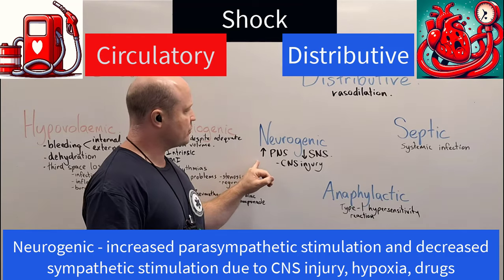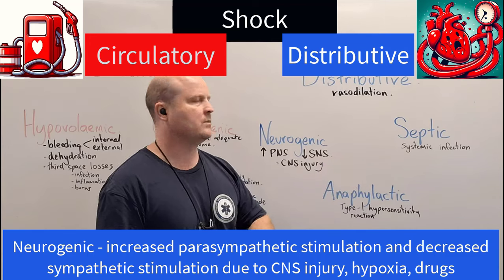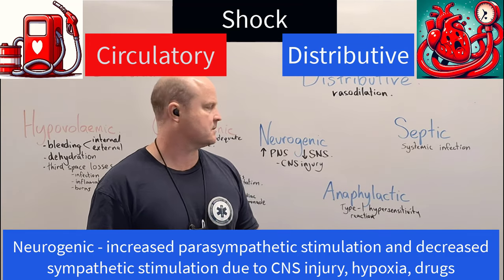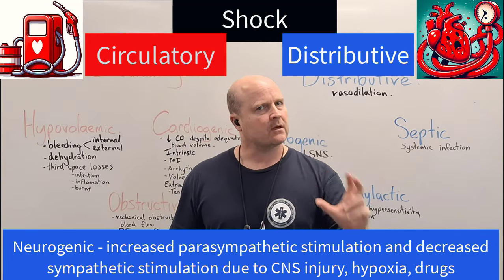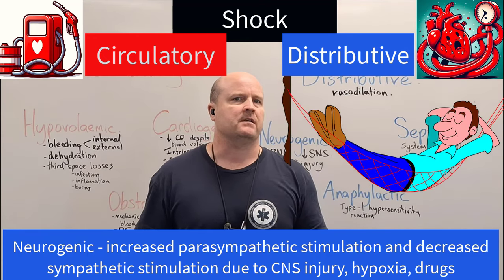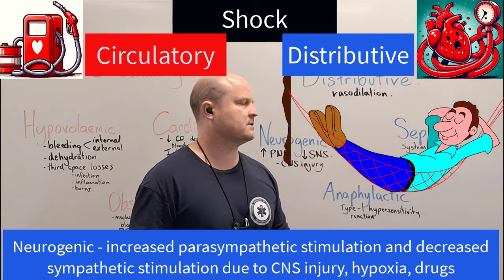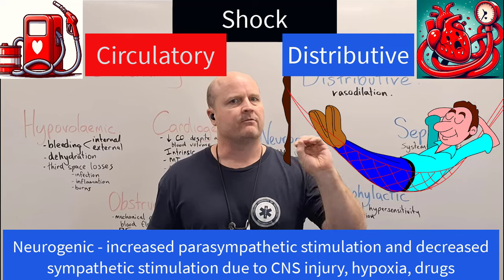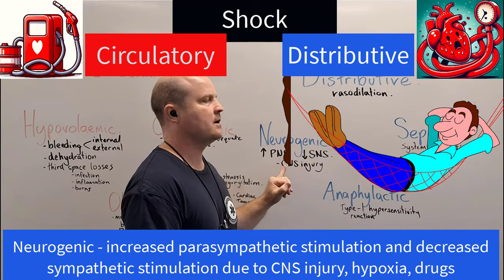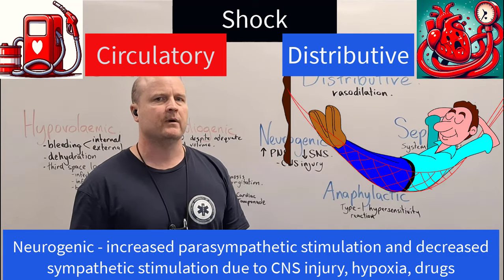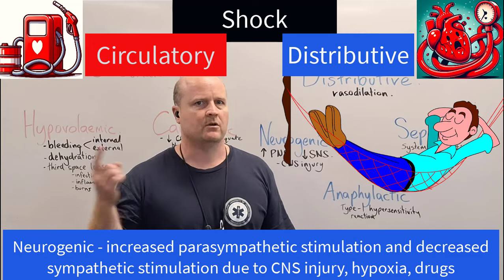Neurogenic shock involves increased stimulation of our parasympathetic nervous system and decreased stimulation of our sympathetic nervous system due to some central nervous system pathology or injury. Our parasympathetic nervous system is rest and digest, and causes vasodilation, whereas our sympathetic nervous system — fight, flight, fright — causes vasoconstriction of our peripheries. If we've got too much vasodilation because the parasympathetic nervous system has kicked on too much, all our blood will sit in the periphery and not be able to circulate.